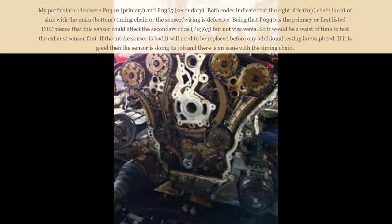My particular codes were the P0340 primary and the P0365 secondary. Both codes indicate that the right side top chains are out of sync with the main bottom timing chain, or the sensor wiring is defective.